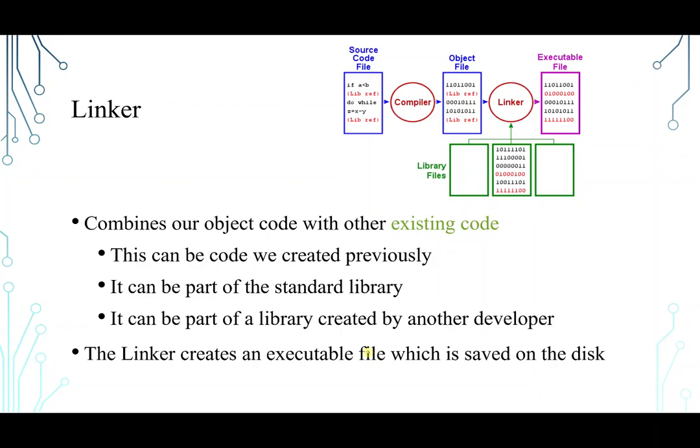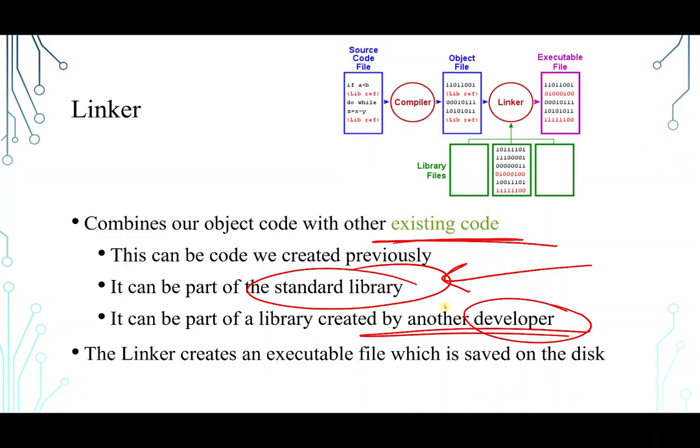So the linker. The linker basically combines our object code with existing code. Existing code, it could be a code you created previously or it can be a part of a standard library. We are going to know what are those standard libraries. Actually, those are libraries where we use tools from or other code from. Someone did them. Basically, those are the standard libraries set by the C++ community. Or maybe it could be another library that is created by another developer. It doesn't have to be from C++ community or the creators of C++. It could be another developer. So the linker creates an executable file which is saved on the hard drive, on the disk. And this is the most important statement in this slide. The linker creates an executable file.